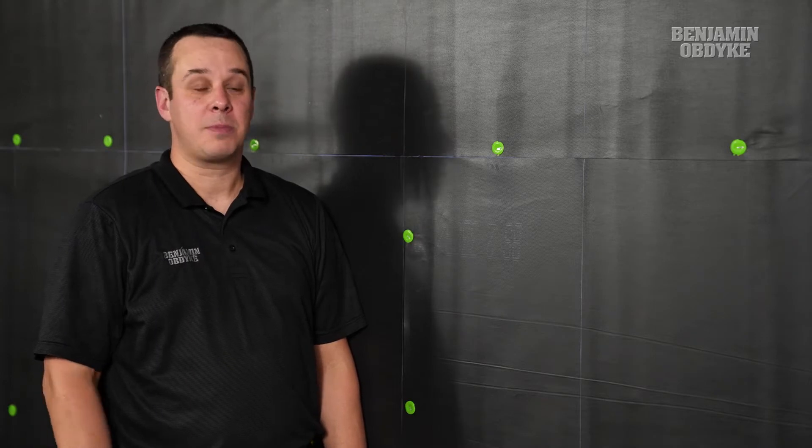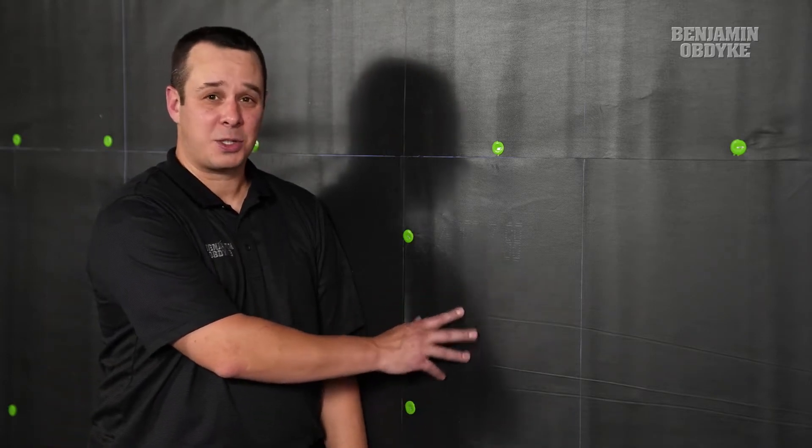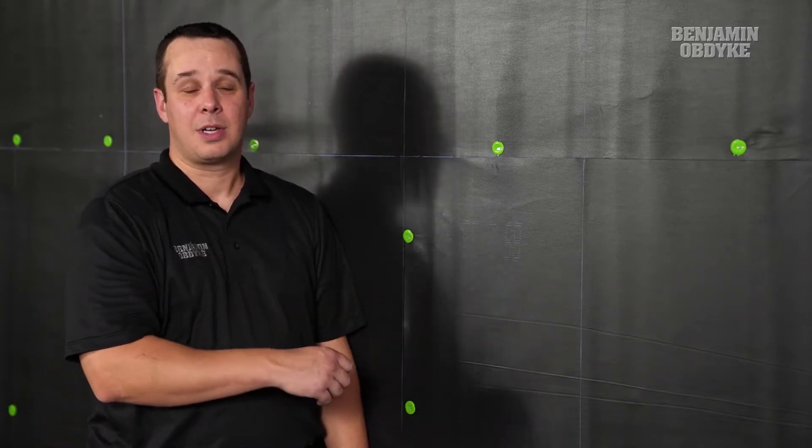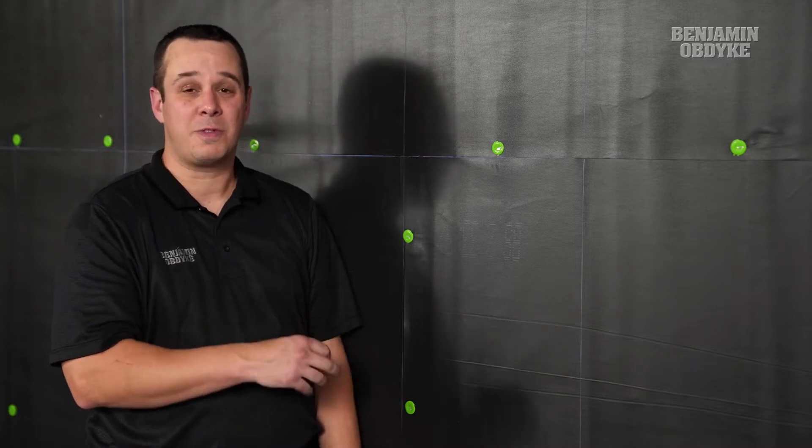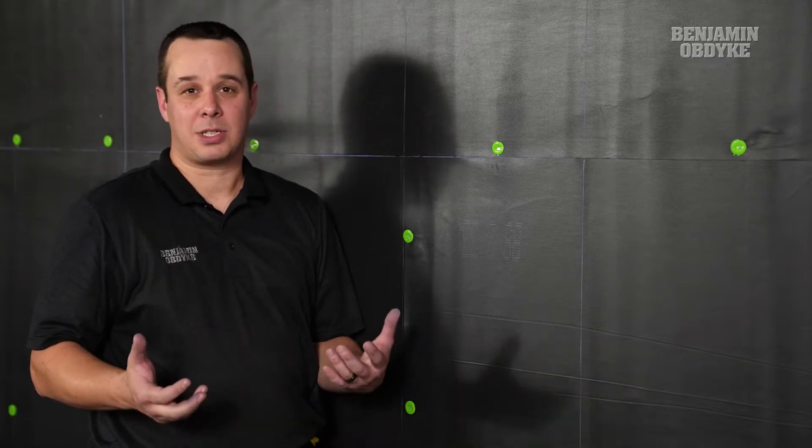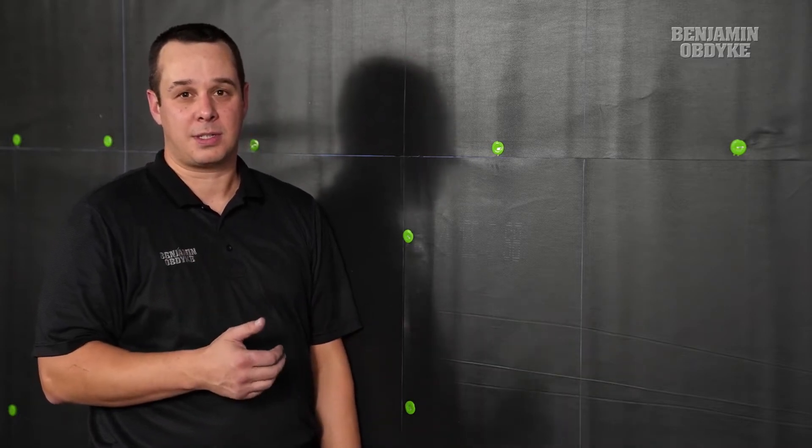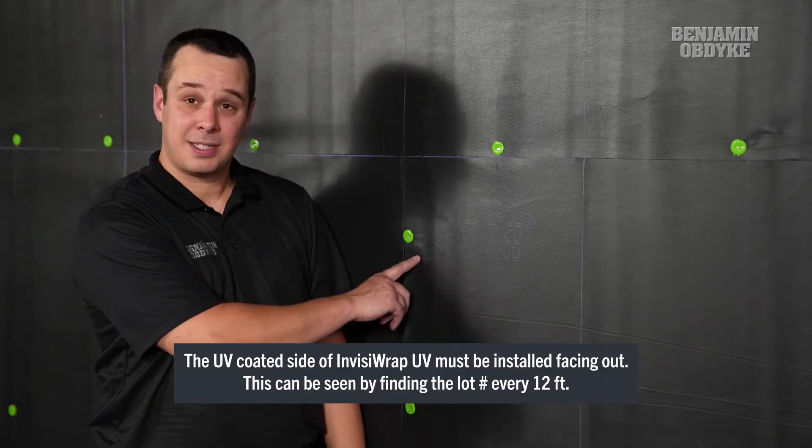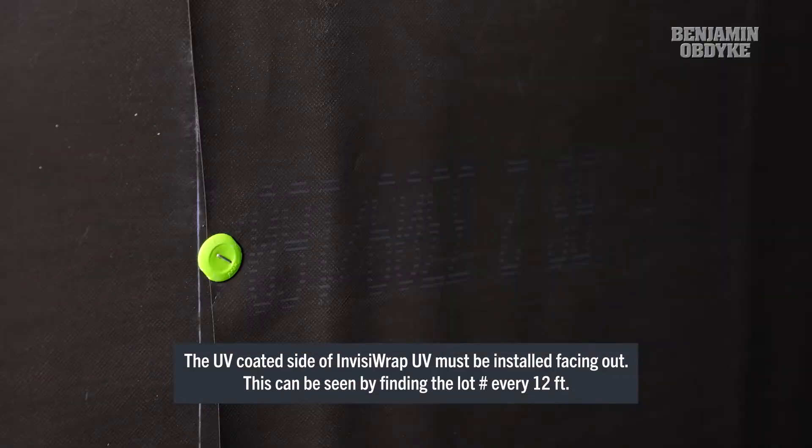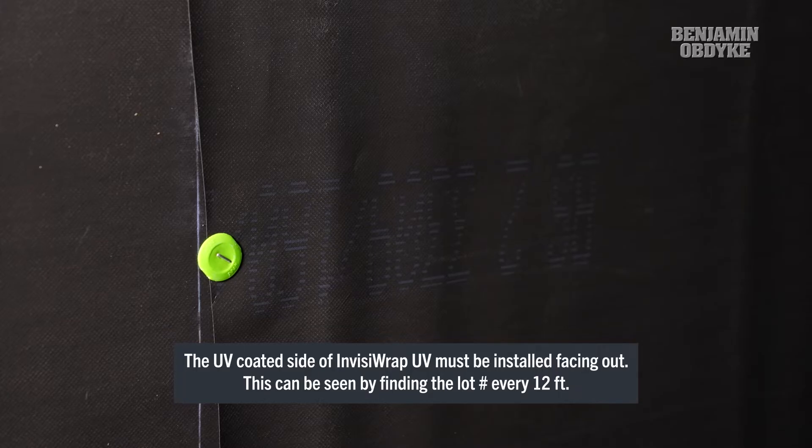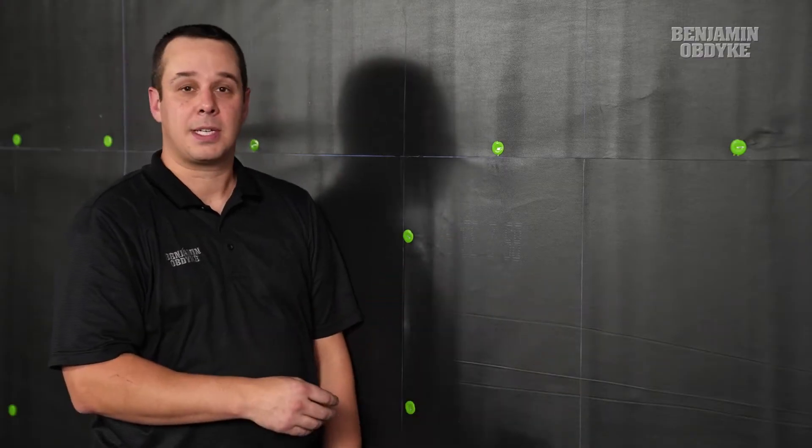When installing InvisiWrap, it's important to make sure that we have the glossy smooth side to the exterior. This has a polyester UV coating which is the magic layer for UV resistance. This can be confirmed by seeing the lot number that is printed about every 12 feet along the roll, just to make sure you have the right side facing out.